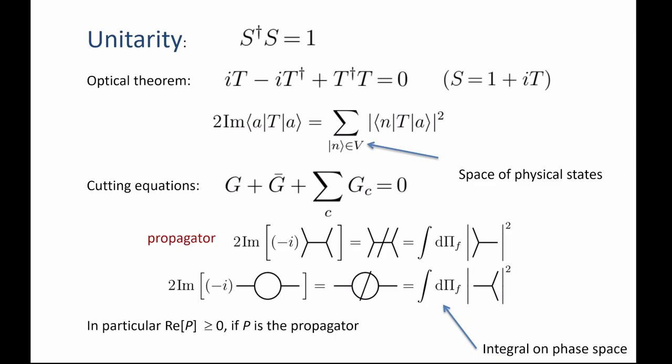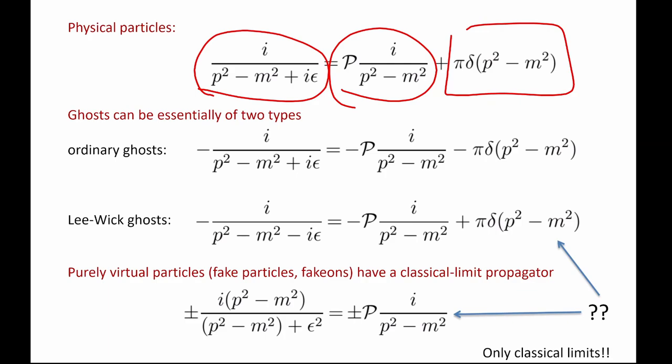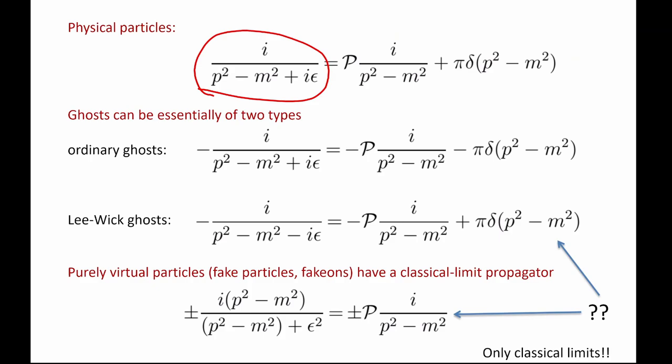You can also have other choices. You can change the sign, and there is a way to make sense of them by Lee and Wick. Finally, the other possibility is to have no real part at all — this is the fake particle. The idea is to have nothing: it will work for both signs in front. These two things — Lee-Wick ghosts and faicons — are particular because you cannot use these propagators inside Feynman diagrams as they appear. Using plus-i-epsilon and minus-i-epsilon simultaneously inside Feynman diagrams violates locality and hermiticity of counterterms.